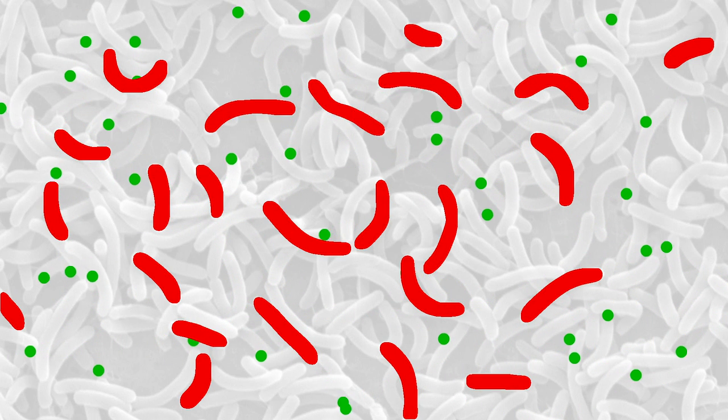They begin to carry out group behaviors. The kinds of group behaviors controlled by chemical communication are behaviors that require lots of cells acting in unison to be effective.